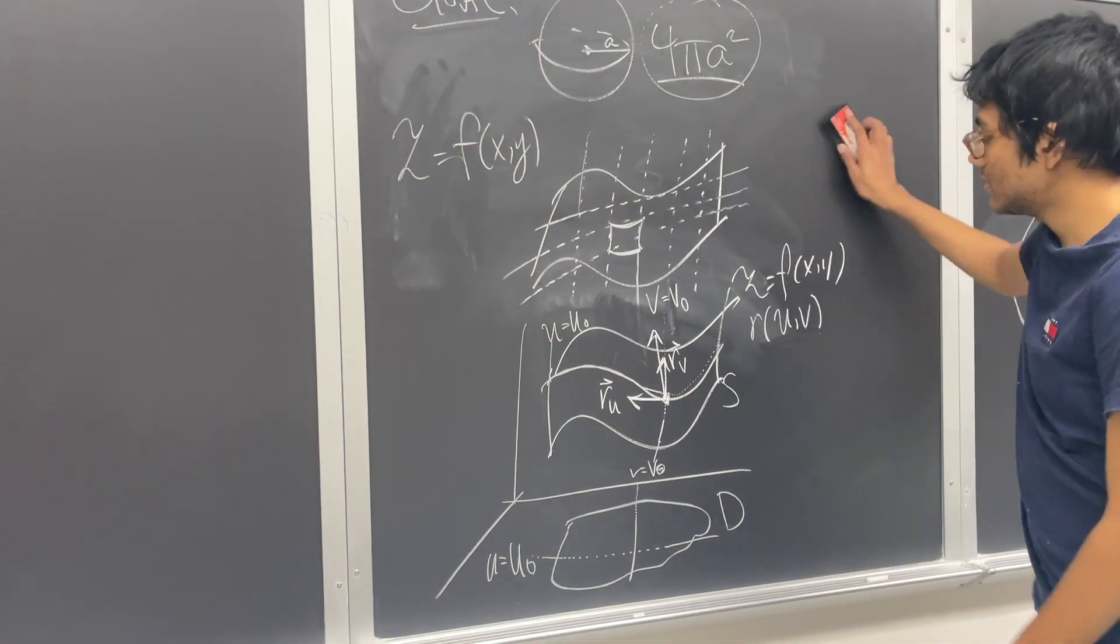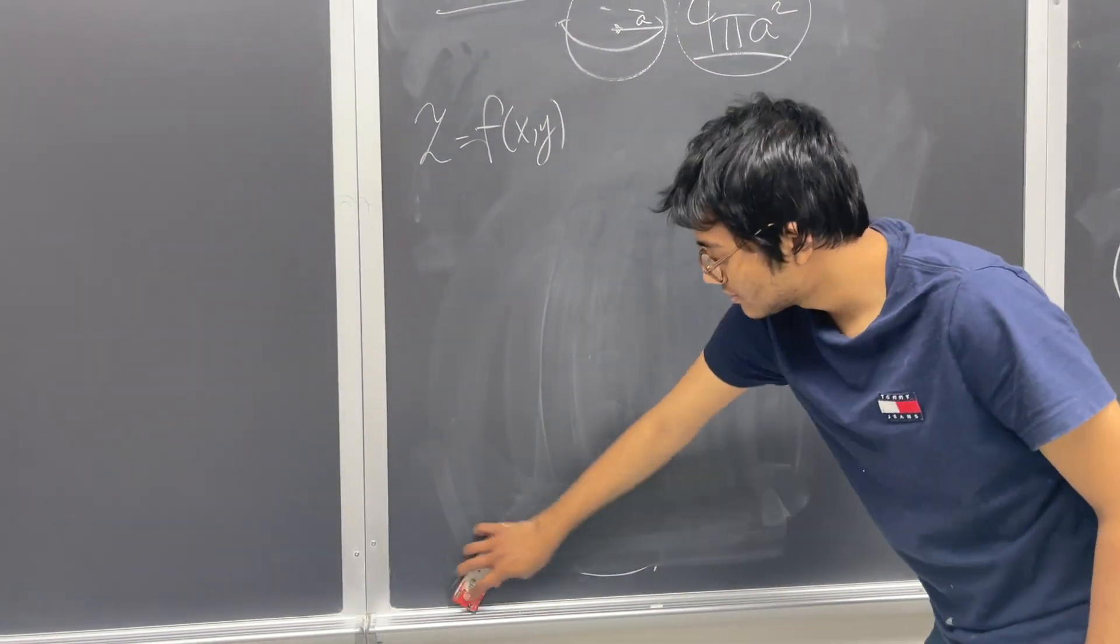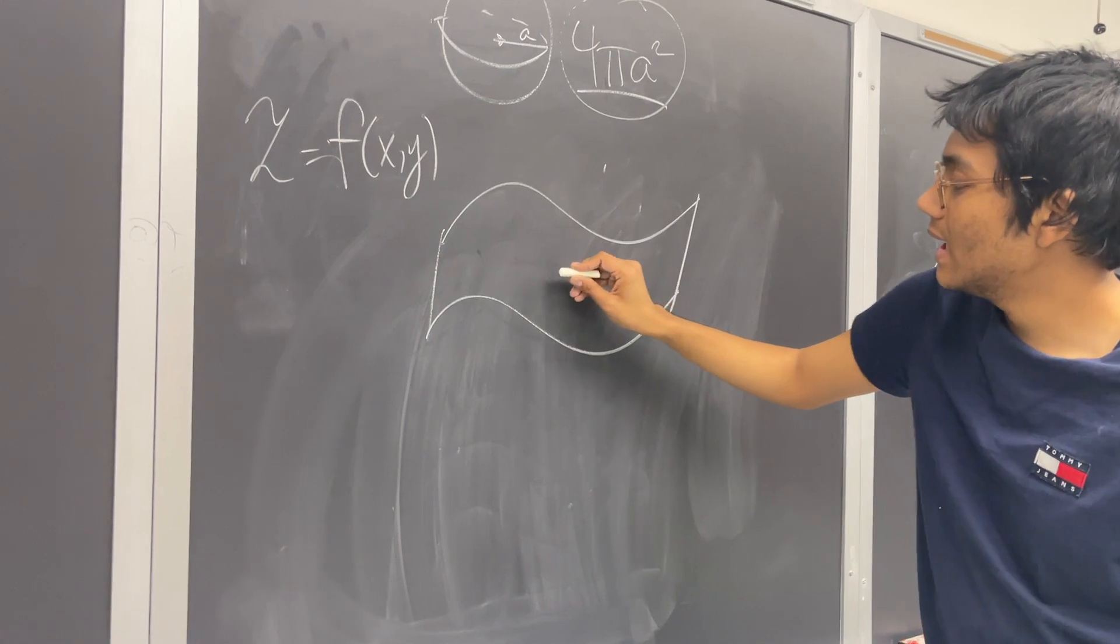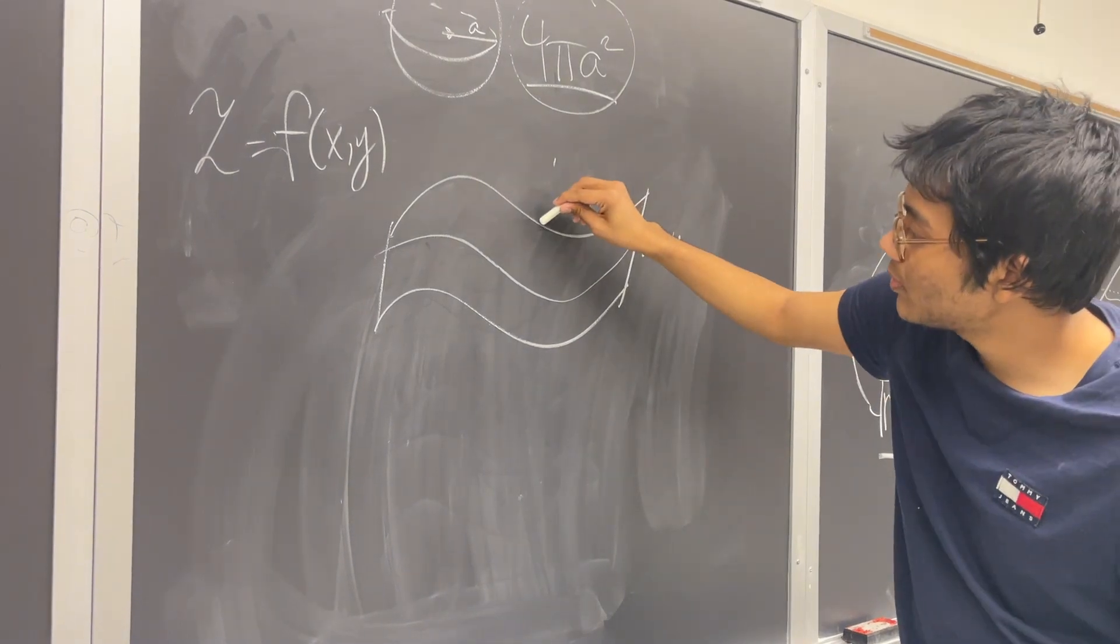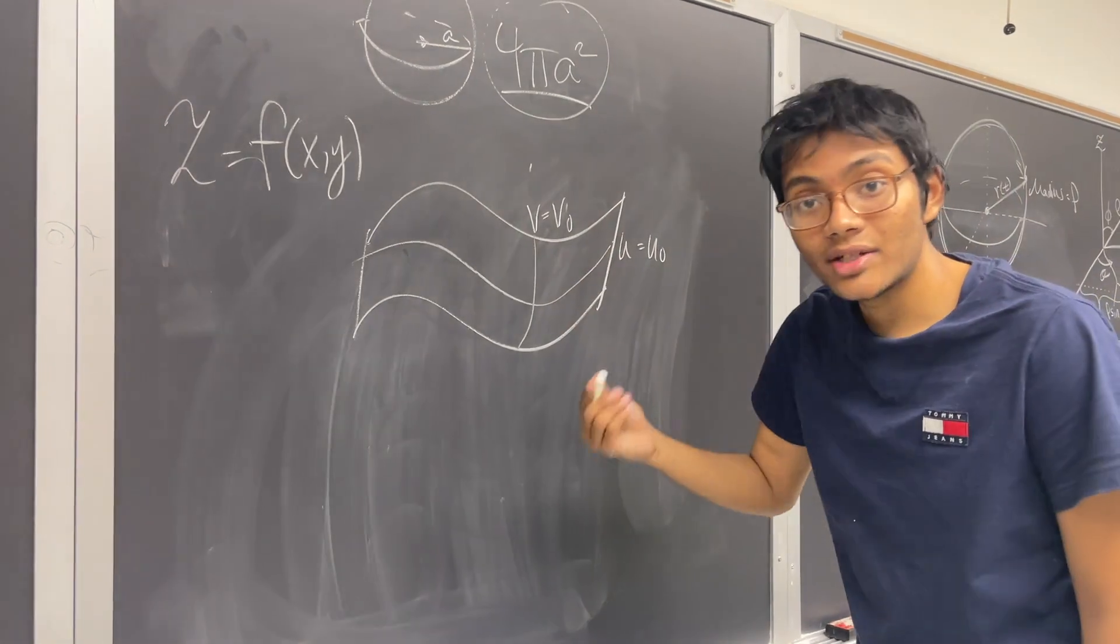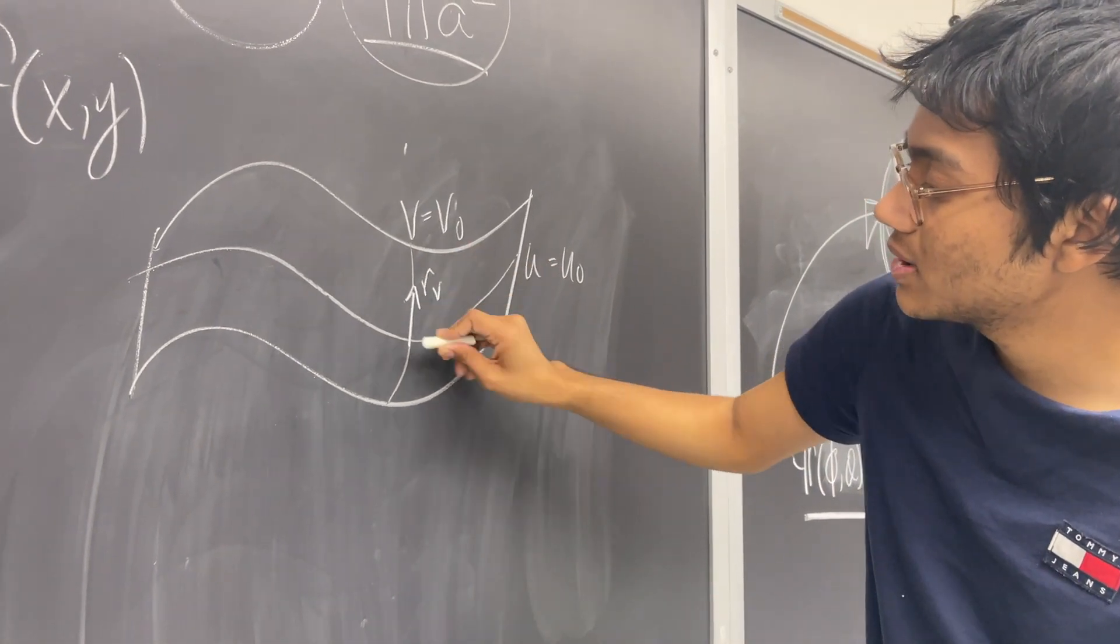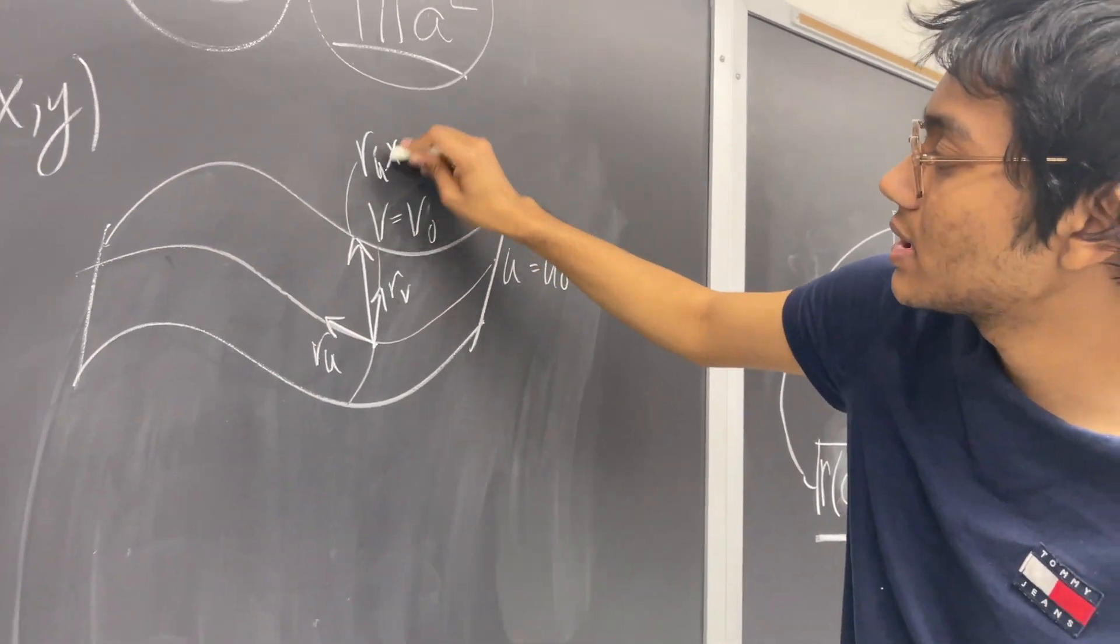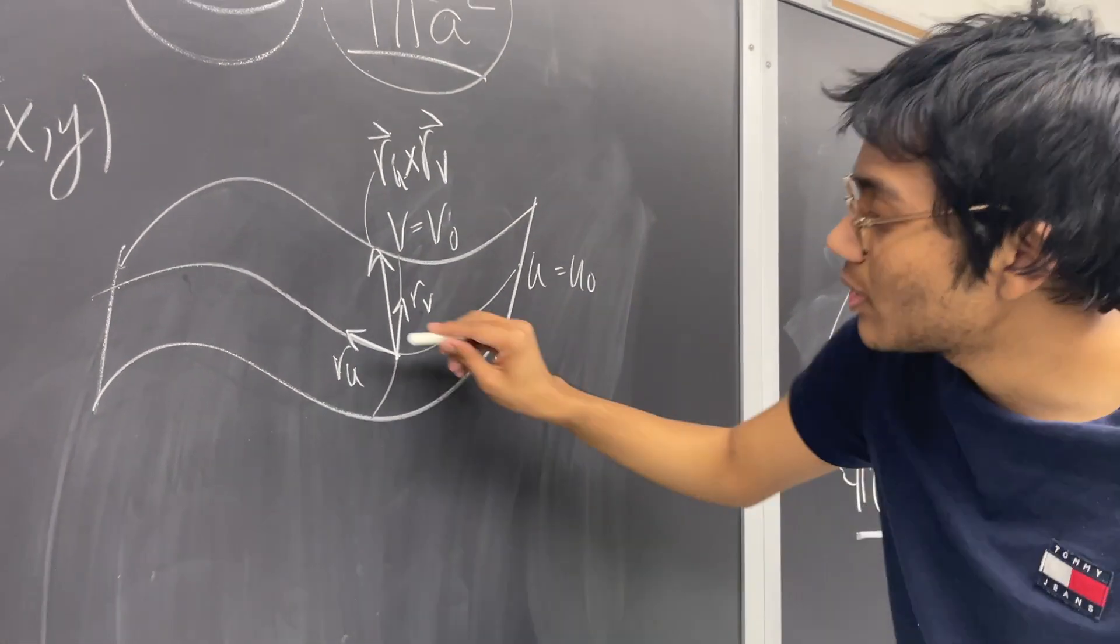So the main idea here, let's erase all of this. So the main idea is that I have my surface. And I hold one of my parameters constant. That's u = u₀. I hold my other parameter constant. That's v = v₀. I take the derivative of the partial derivative of my parametrized function with respect to one of the variables. Do the same in the other direction. And I take their cross product. So this is their cross product, r_u × r_v. And then what am I going to do? The whole point of taking the cross product is to get a little patch.